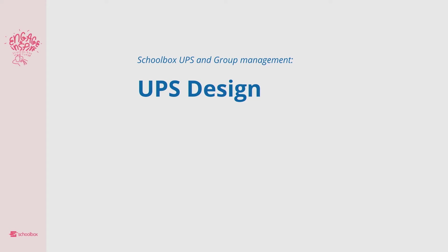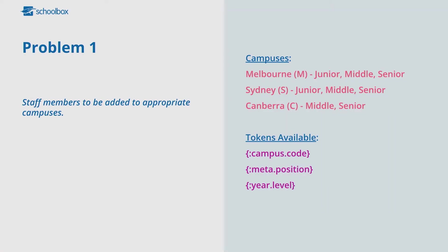A lot of the time we find that schools will start off with quite rudimentary designs and over time add more and more complexity. Here's one problem that came up: I need staff members to be added to the appropriate campus. I can't use campus codes because my campuses of Melbourne, Sydney and Canberra just have three codes, but each campus actually has three sub-schools — well, two have three and one has two — and I need them split along each of those lines. The school uses Synergetic, which means you can't have multiple year levels associated with a user. So how do we build these rules to make sure each person is in the required location?